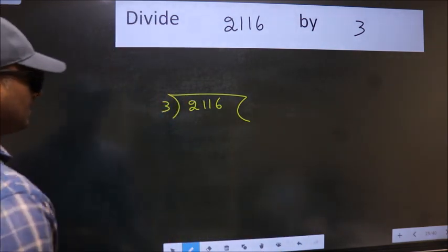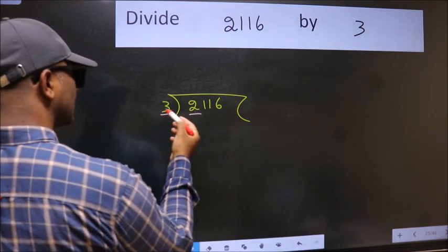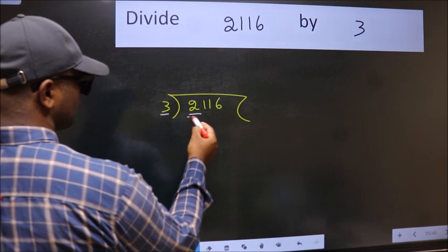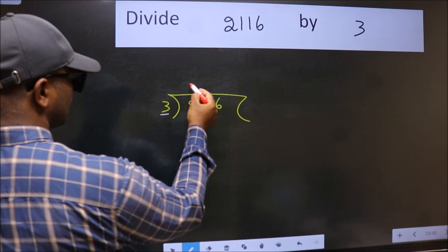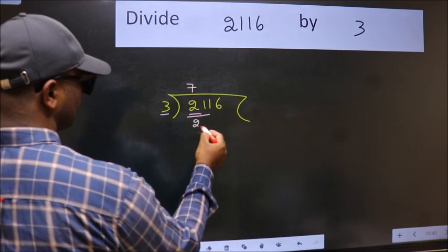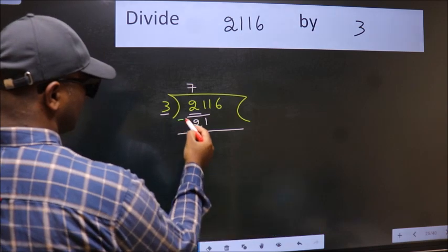Next, here we have 2 and here 3. 2 is smaller than 3, so we should take 2 numbers: 21. When do we get 21 in 3 table? 3 7s 21. Now we should subtract. We get 0.